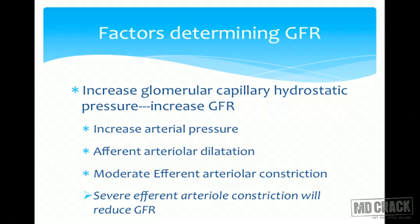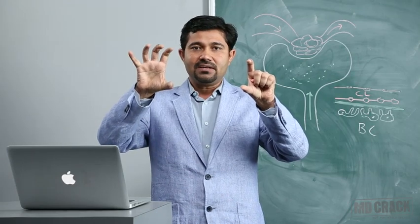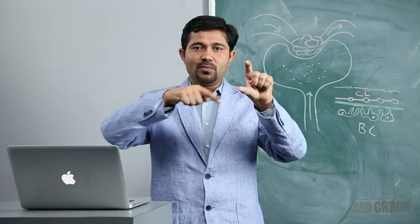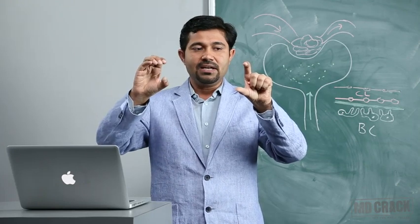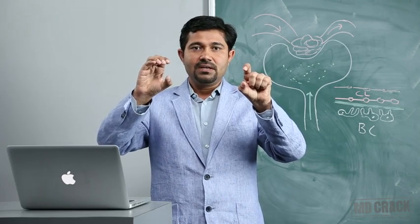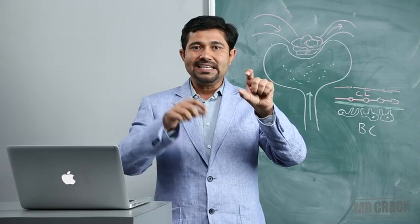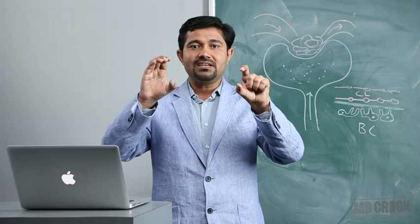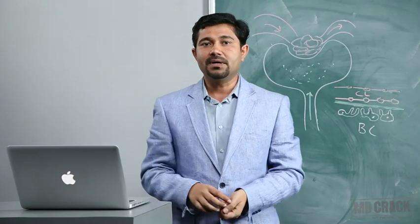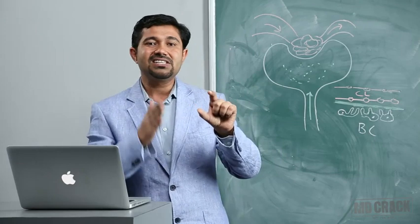The glomerular capillaries lie between the afferent and efferent arterioles. If I dilate the afferent arteriole, more fluid flows into the glomerular capillaries and pressure increases. If I constrict the efferent arteriole, pressure in the glomerular capillaries also increases and filtration is more. So GFR can be increased by dilating the afferent arteriole or by moderately constricting the efferent arteriole.